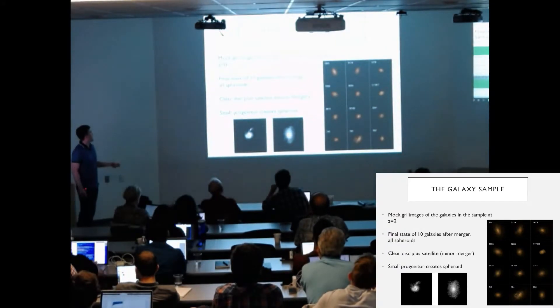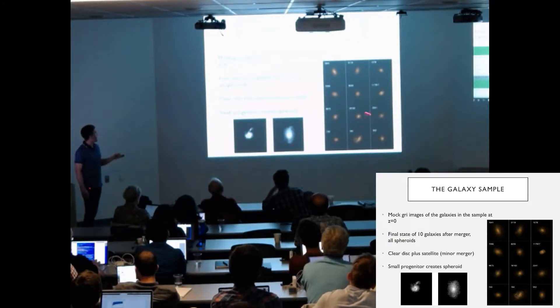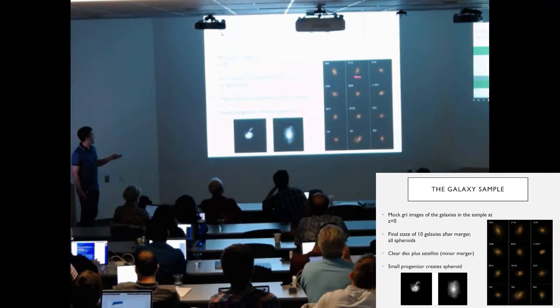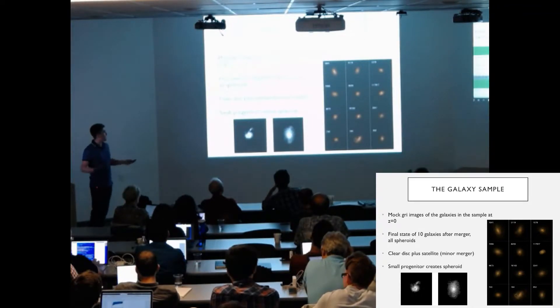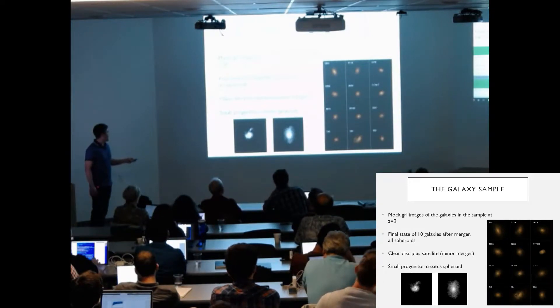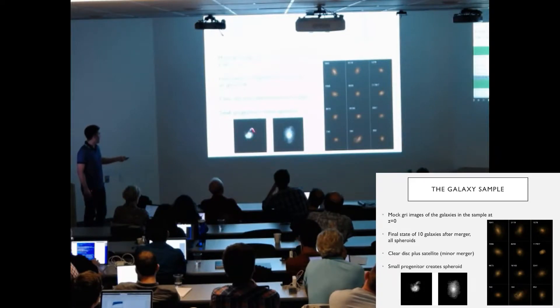So what does this galaxy sample look like? Well this is some mock GRI images of the galaxies at redshift 0. It's the final state of these galaxies after the merger has taken place, and you can see that these are all spheroids. These two plots here show before and after. This is the before image, and you can see a disk and the satellite here, and this is the spheroid that's produced after the merger.